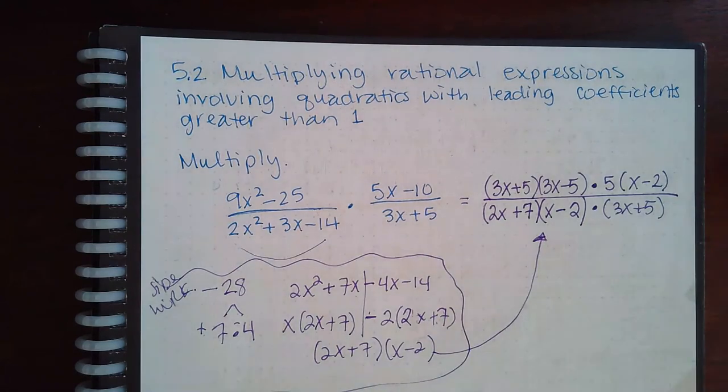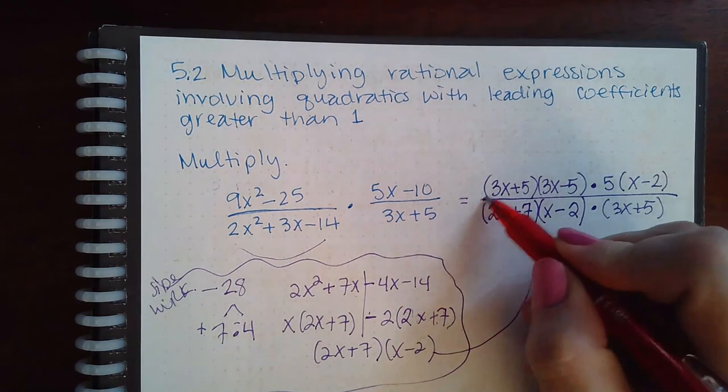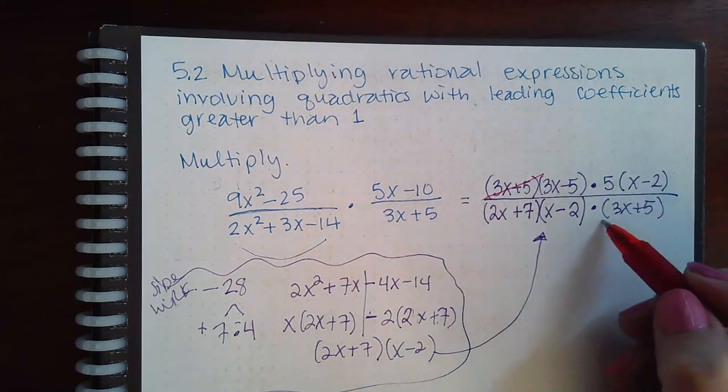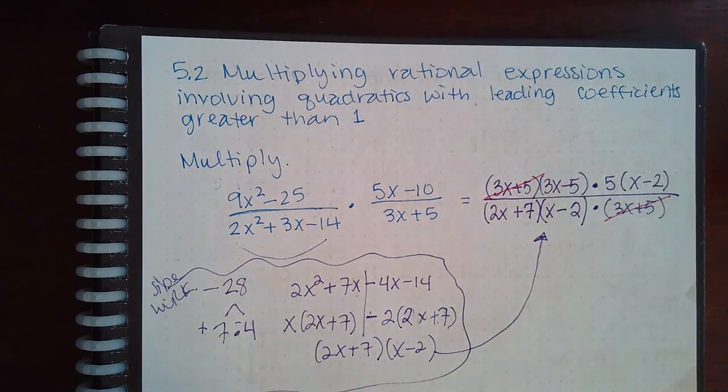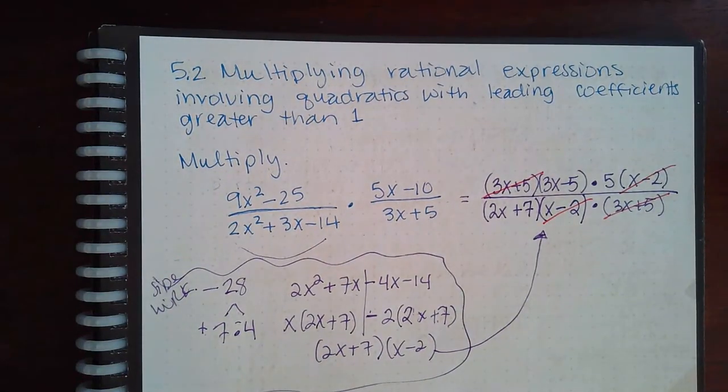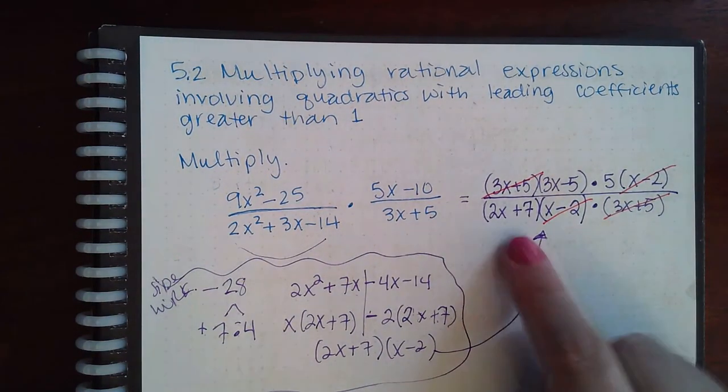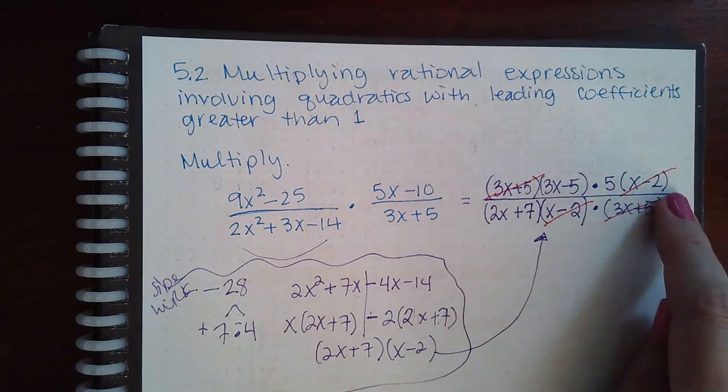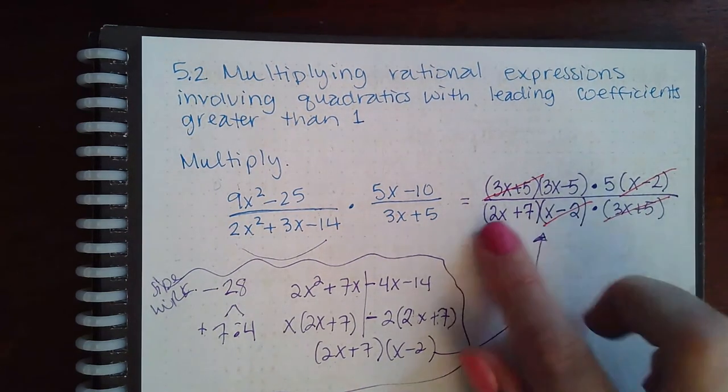Now, once we have everybody factored, we still need to go through and reduce. So I see the 3x plus 5 on top here, the 3x plus 5 at the bottom there. I also see an x minus 2 and an x minus 2. So those are all gone. But this factor doesn't match any of the factors up here.